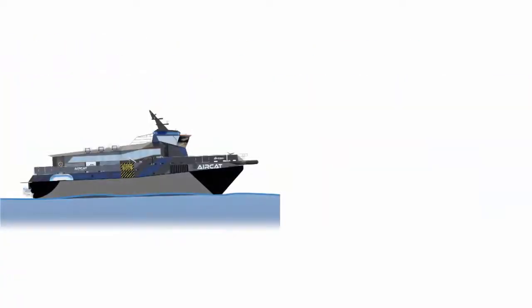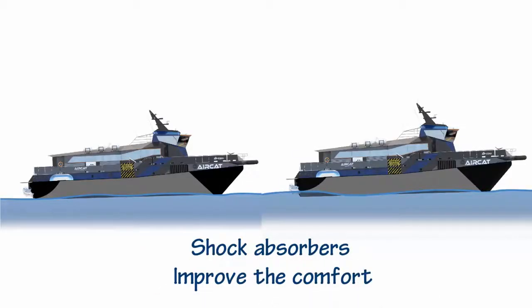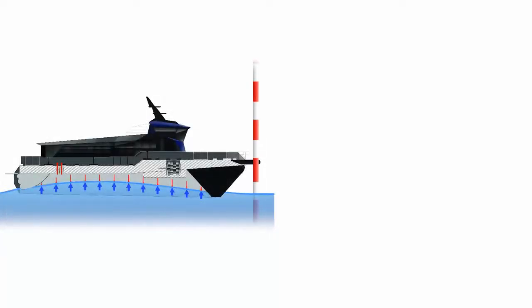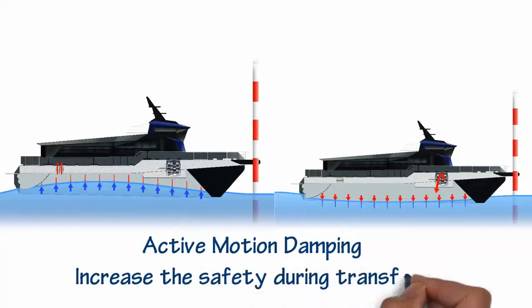The air cushion and the stern bag act as shock absorbers and improve comfort when sailing at very high speed. The pressure of the air cushion is regulated while maintaining position during transfers, which confers an active motion damping behavior to the vessel and increases safety during transfers.